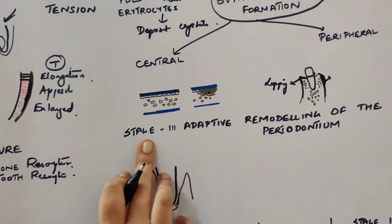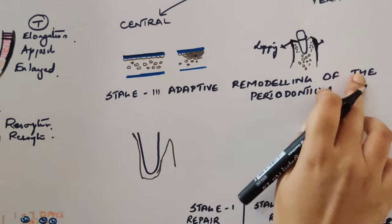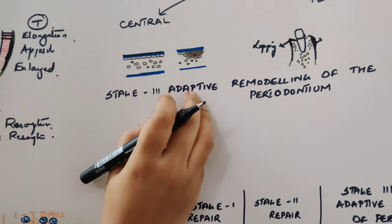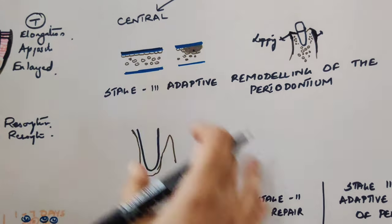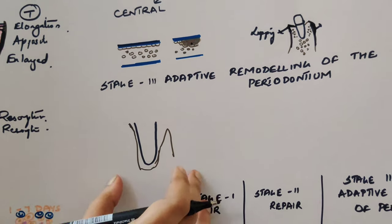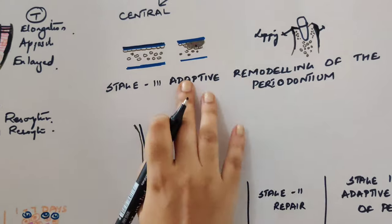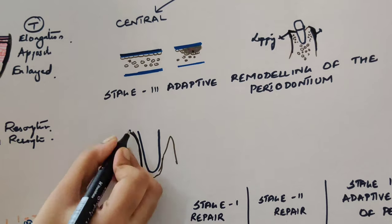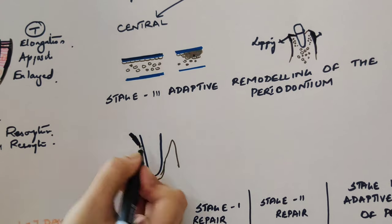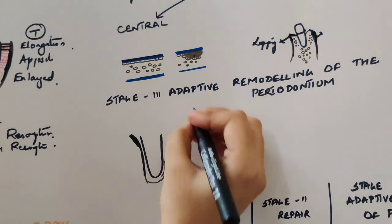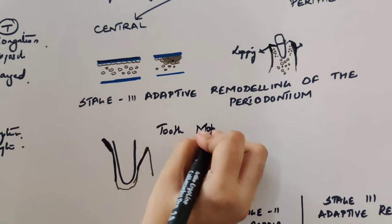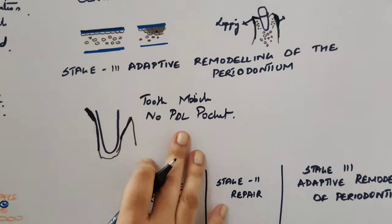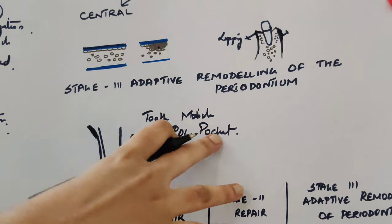Stage 3 is adaptive remodeling of the periodontium. When injury becomes excessive, the periodontium tries to remodel itself. In this stage there is widening of the periodontal ligament, funnel-shaped widening at the crest, and angular bone defects. The tooth becomes mobile, but there is no periodontal pocket.